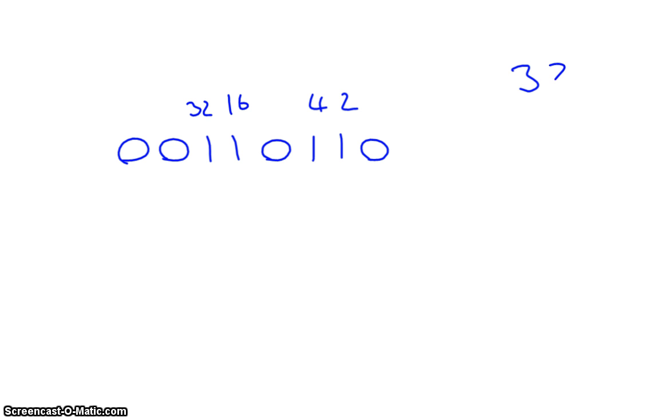32 plus 16 plus 4 plus 2. So we'll add these up and we've got 4 plus 2 gives us 6, plus 6 is 12, plus 2 is 14. 3 plus 1 plus 1 and we've got 54.